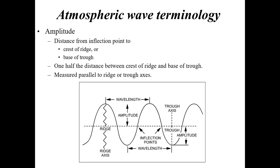Wavelength can also be measured from inflection point to inflection point. Remember, the inflection point is the point with straight-line flow — a transition area between a trough and a ridge or a ridge and a trough. Amplitude is basically half the vertical distance from the trough axis to the inflection point. It represents one half the total vertical distance between the trough axis and the next ridge axis. The dashed line down the horizontal middle of the diagram represents your inflection point.